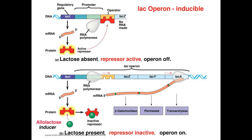What they found was that these genes were controlled by a single promoter and are transcribed into a single mRNA, which is translated into separate polypeptides, one of which is an enzyme called beta-galactosidase. Transcription is regulated by a single genetic switch, which is a DNA sequence called an operator.